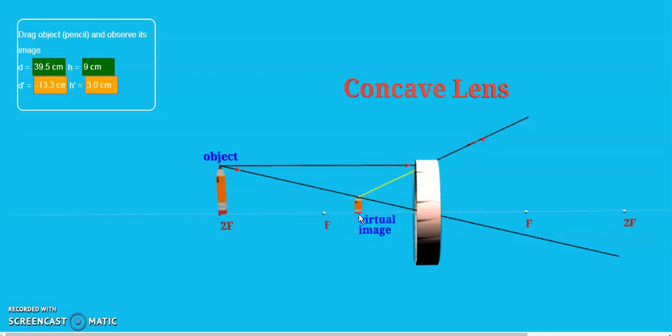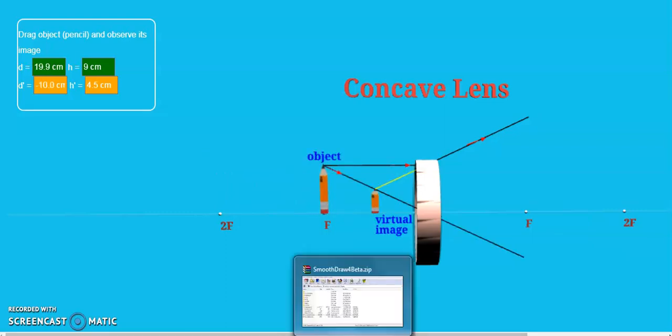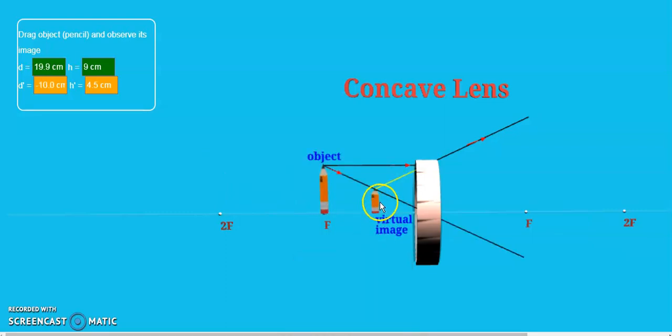And secondly, image is formed between the focus and the optical center of the lens. No matter how much you change the position of this object, even if you're placing it at its focus, you will still find out its image being formed as a virtual image and smaller than size.